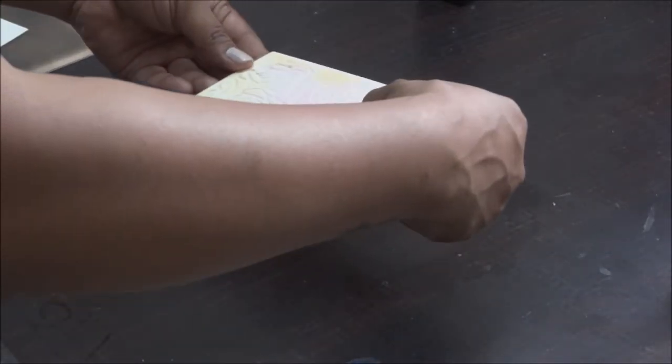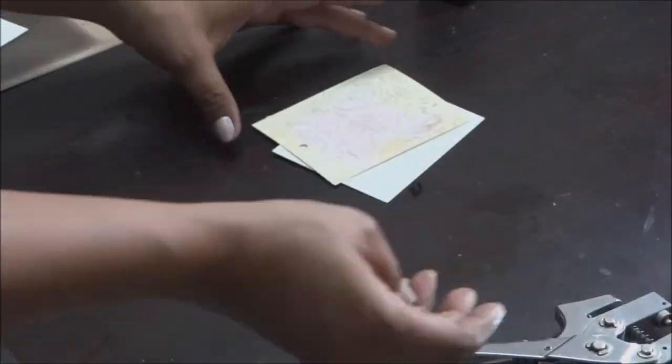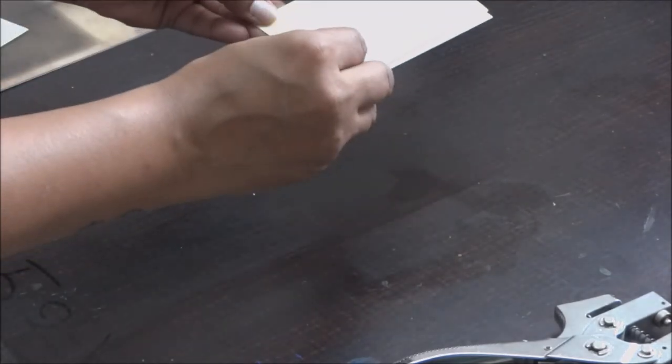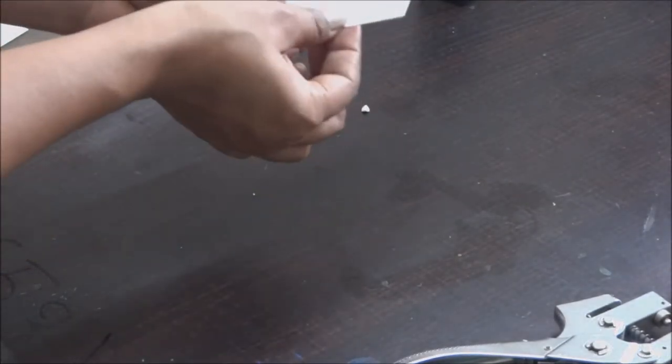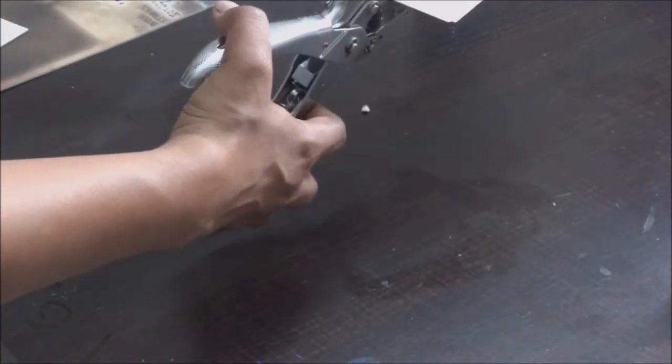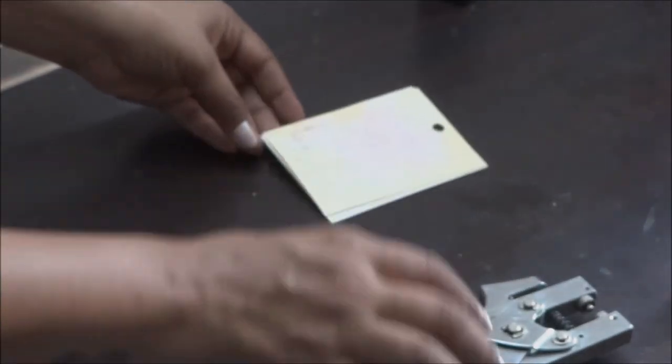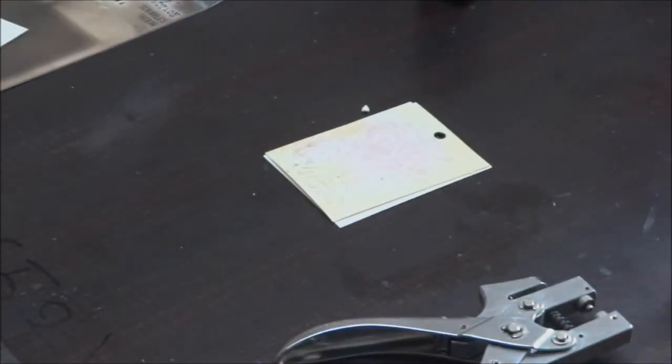Now it's time to make a hole and attach both the tags. I'm using my punch to make a hole and now we're going to add an eyelet. Please make sure we want our tags to slide, so make sure you don't press it very hard. See, it's twisting, yes it's almost done.